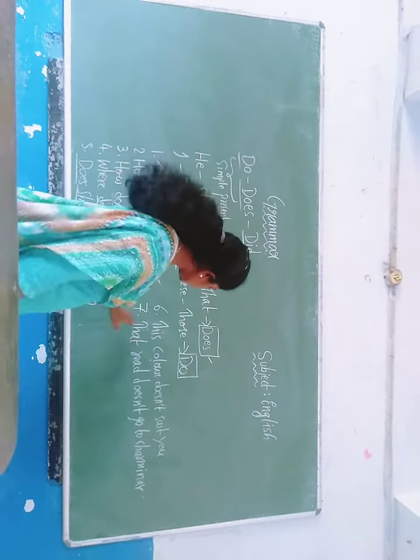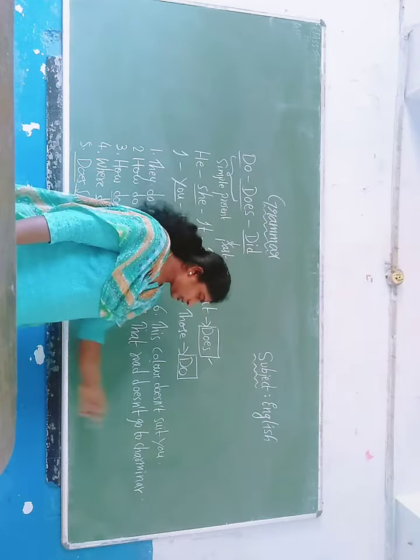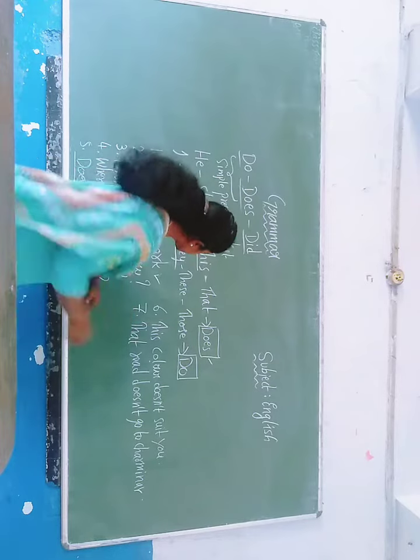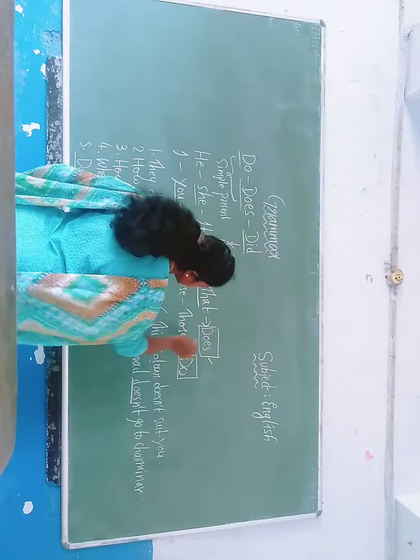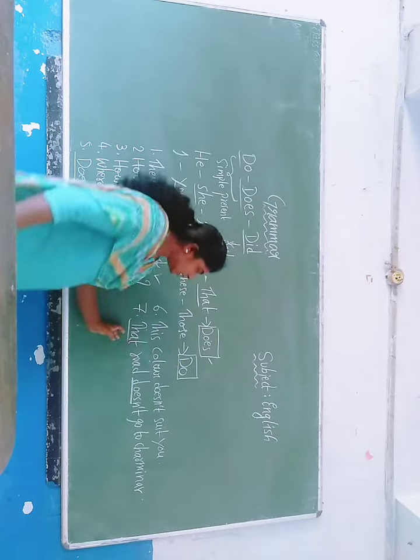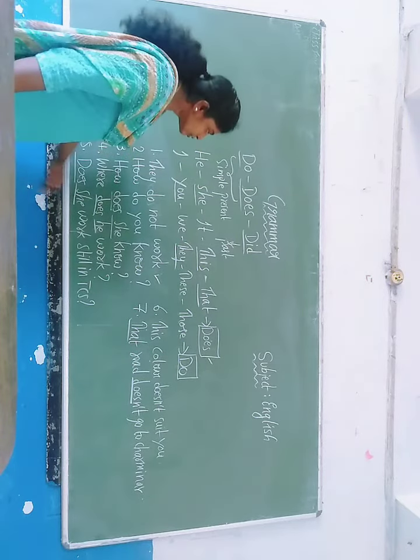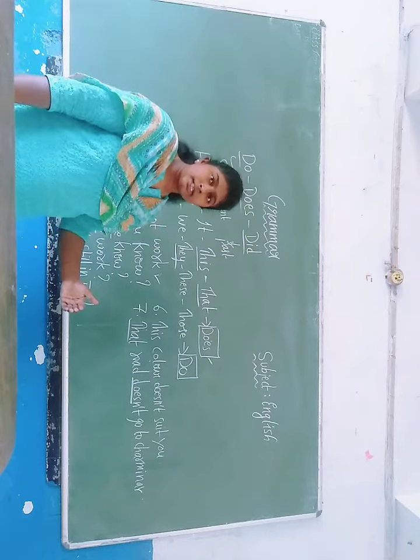Yes children, let us continue here. That row doesn't go to Charmina. So that here, that doesn't, the negativity is this, but that does. That row doesn't go to Charmina. So in this way, you have to frame the sentences.